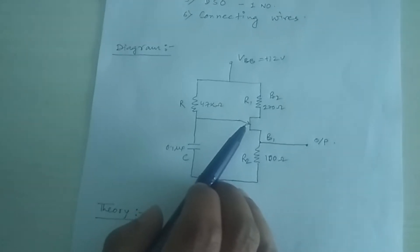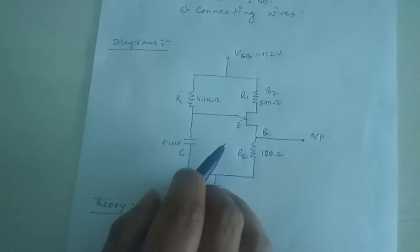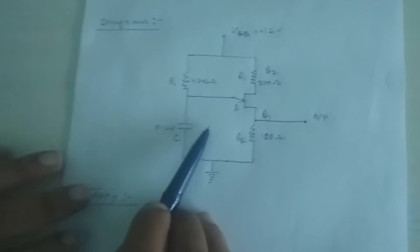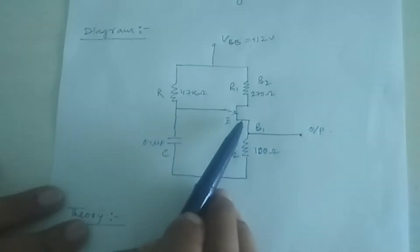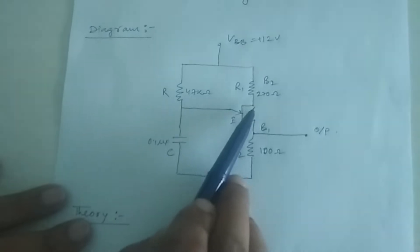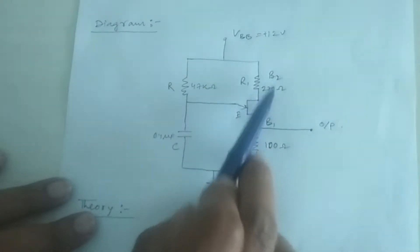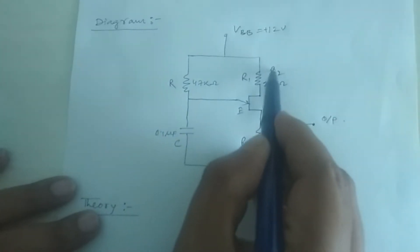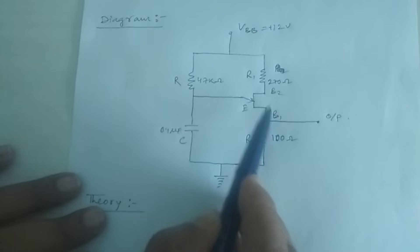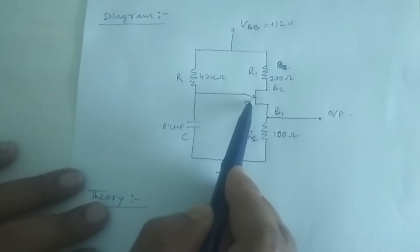The output of the relaxation oscillator depends upon the charging and discharging time constant of the capacitor. Here you can see the circuit. It is a UJT which has three terminals — two bases, B1 and B2, and one emitter.